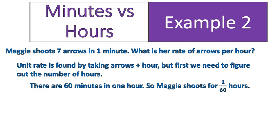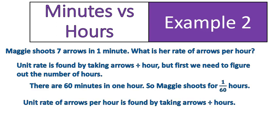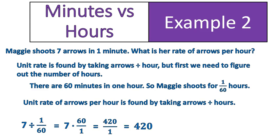She shot for 1 out of 60 hours. Now, all we need to do is divide — arrows divided by hours. She shot 7 arrows divided by 1 sixtieth of an hour. We're going to change that into multiplication by the reciprocal of the fraction, so we flip the second fraction upside down. We multiply 7 times 60, which gives us 420. 420 divided by 1 leaves us with 420 — Maggie shot 420 arrows in a single hour.